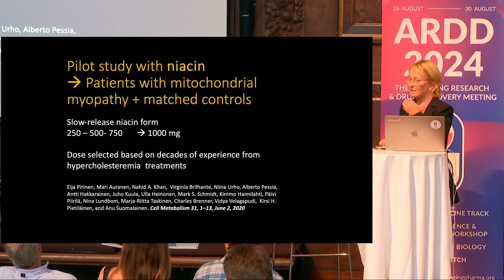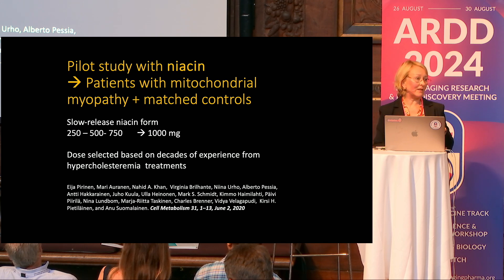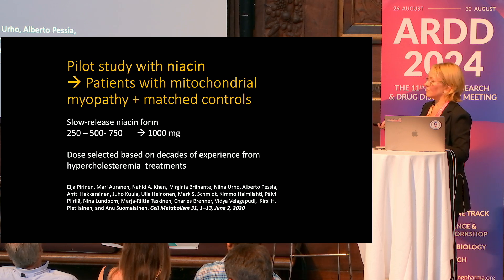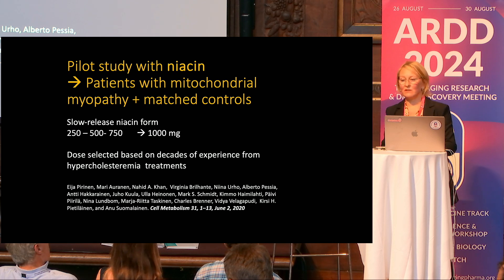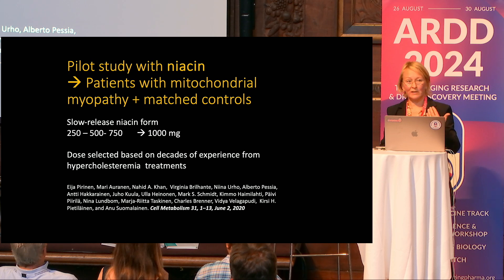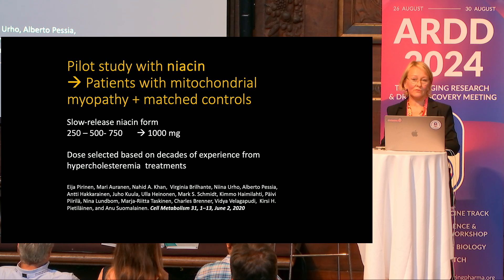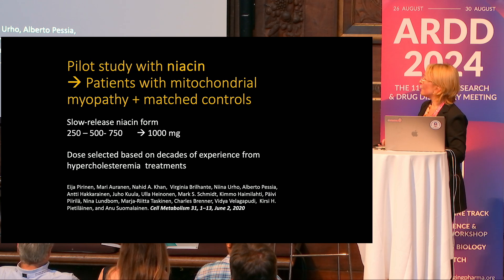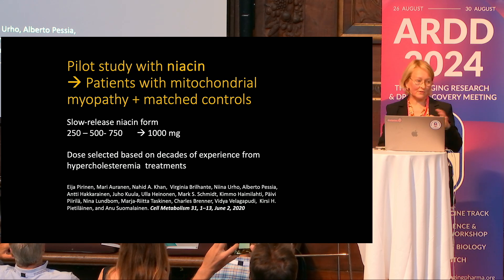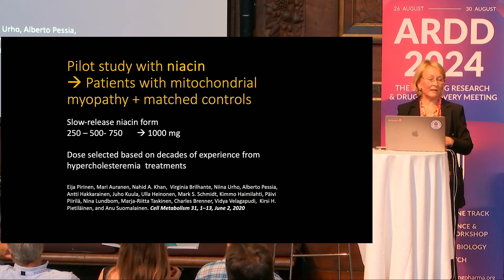We decided to do a small pilot trial with patients who have exactly the same mutation as Oscar. I chose niacin because there were tens of years of experience with its side effects, and we knew that doses used for decreasing cholesterol would likely produce some kind of physiological effect. The doses are quite large — what I call prescriptional doses — and should really be taken with a doctor's follow-up.